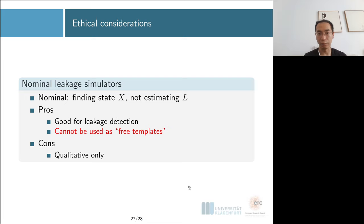With the modeling we are proposing here, we basically found a complete state but we're not going to estimate the leakage function L. The good thing about this is there's no way you can use it as free templates. For most of our goals like leakage detections, it's okay because whether you're doing chi-square or t-test, they're both qualitative only. You don't really care the value of L. But if you're looking for attack estimation, obviously you need the value of L.